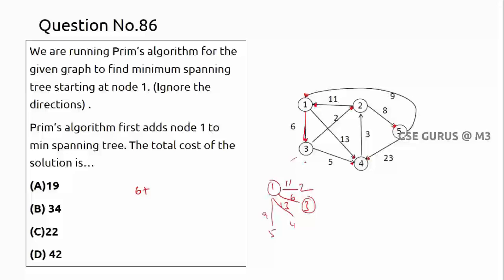We have to visit all vertices such that no cycle should be formed — that's the rule for Prim's algorithm. Now from node 3, we check its adjacents. We cannot select 3-1 (already visited). 3-2 has cost 2, and 3-4 has cost 5. 3-5 is not directly there. Between these two, the minimum is 3-2, so I'll go for 3-2.